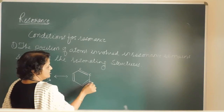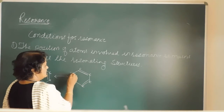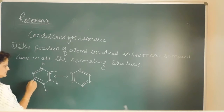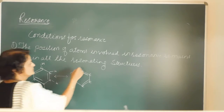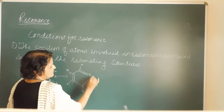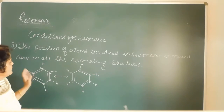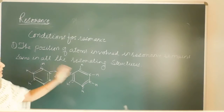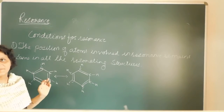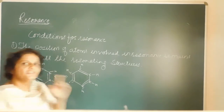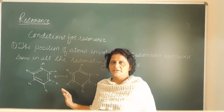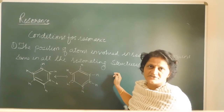Here also six carbons are there, and each carbon has one hydrogen. The position of carbon and hydrogen in all the canonical structures, in all the contributing structures, is the same. Only the position of electrons changes due to redistribution or movement of electrons. So this is the first essential condition of resonance.